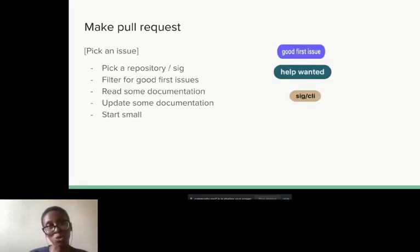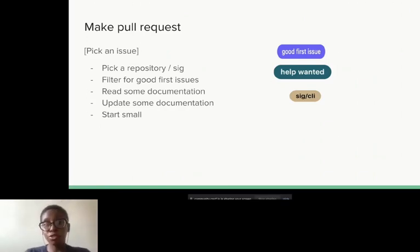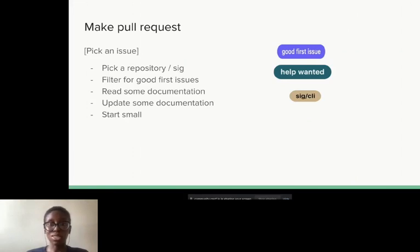To make your first pull request, you have to pick an issue. You can filter — when I first started, I wasn't able to decide which SIG to contribute to, so I started by filtering for 'good first issues' and 'help wanted' issues. Those were low-hanging fruits I could easily get started with. You can filter the main repository for those. If you've decided on a SIG, they most likely have their own repository, so you can go there. It doesn't have to be the main Kubernetes repository. On the main repository, each issue is labeled with the SIG it's assigned to, so you can filter by the SIG you want.